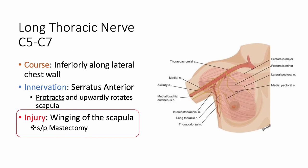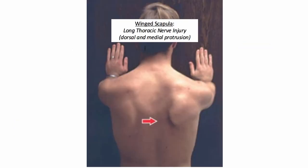For Step 1, you will see vignettes that talk about long thoracic nerve damage in the setting of mastectomies and lymph node dissections. The proximity of breast tissue and lymph nodes to the serratus anterior leaves this nerve quite susceptible to injury. And here's the classic image to keep in mind. Injury to long thoracic nerve produces the winged scapula. This will be described on Step 1 as a dorsal and medial protrusion of the scapula when a patient is asked to lean against a wall with arms outstretched as seen in this image.